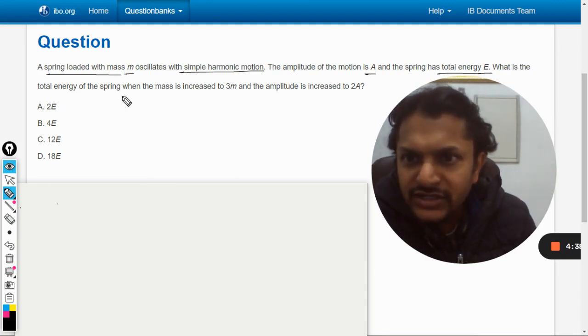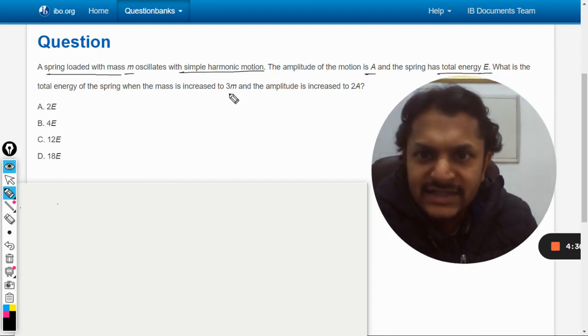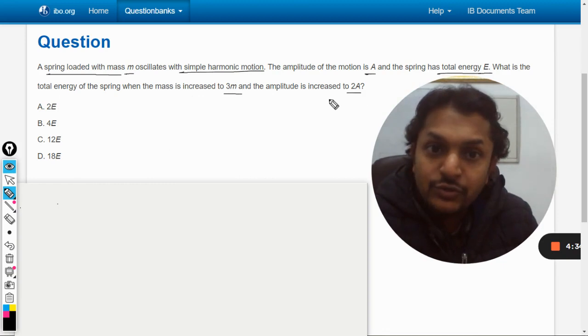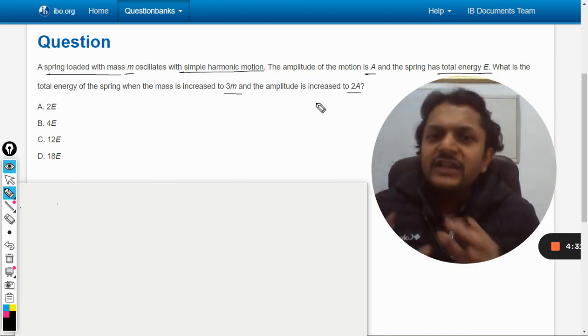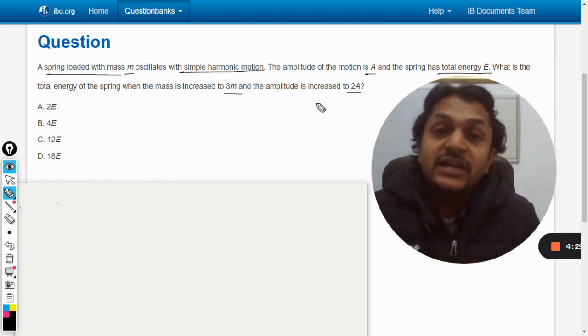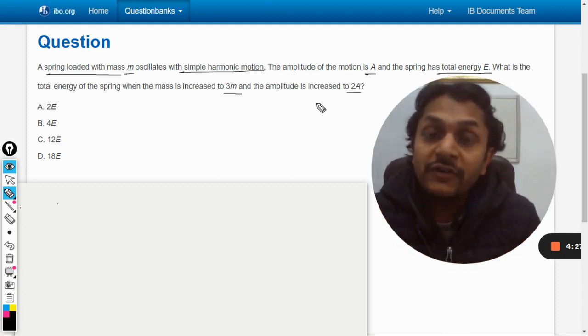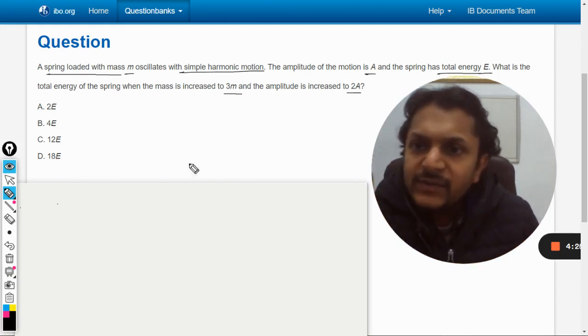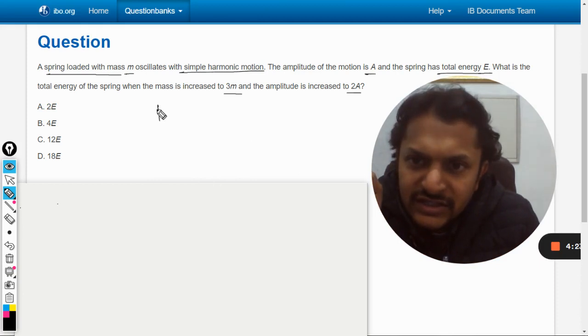What is the total energy of the spring when the mass is increased to 3m and the amplitude is increased to 2A? So it's a fairly simple question, but the problem is we must know which formula we are going to use here. As per the description of this question, it's very easy.